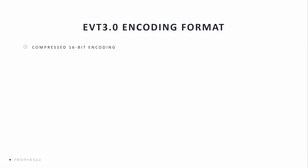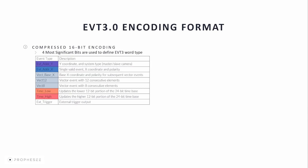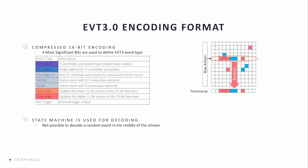EVT3 is a compressed 16-bit encoding format where the four most significant bits are used to define the word types listed in the table. Other bits are used differently depending on the word type. When decoding data in this format, you'll need to follow the order of events using a state machine. You cannot decode a randomly picked event from the stream. Also, a data drop by a decoding platform will lead to state corruption. In the schema, we describe the principle of EVT3 encoding. The timestamp is encoded by the time-low and time-high, where time-high encodes the 12 most significant bits and time-low encodes the 12 least significant bits of the timestamp.